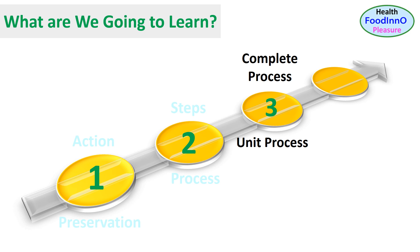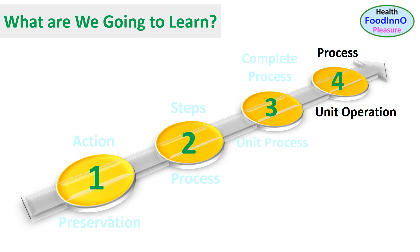Third, what is unit process? Unit process is the complete process containing all the steps or all unit operations to process a food product from its raw materials or original state. Fourth, what is unit operation? Unit operation considers the analysis of each step in the unit process.